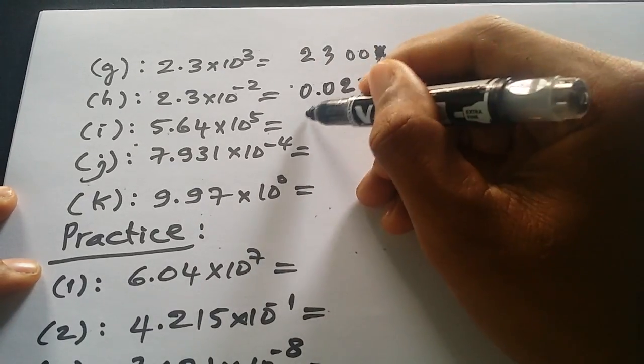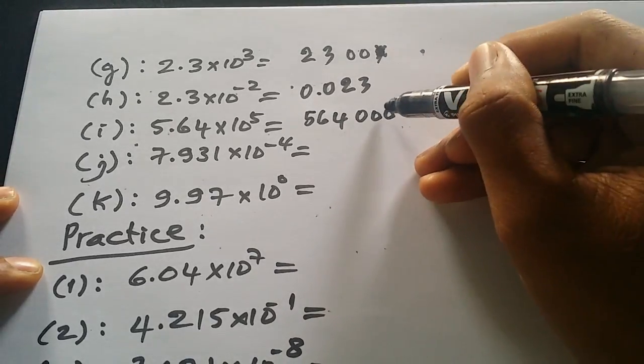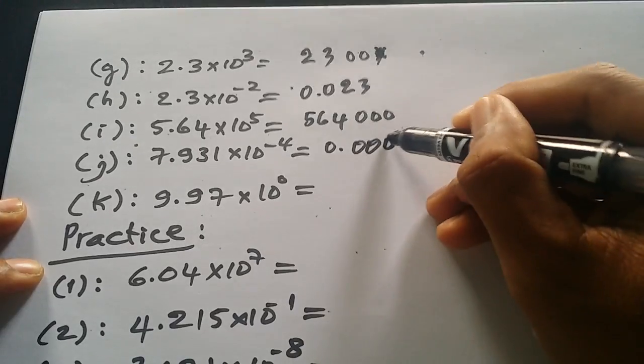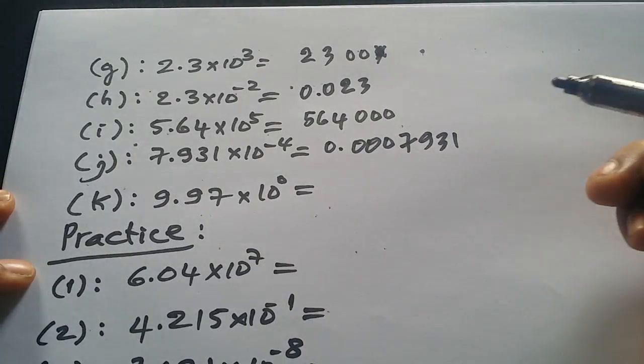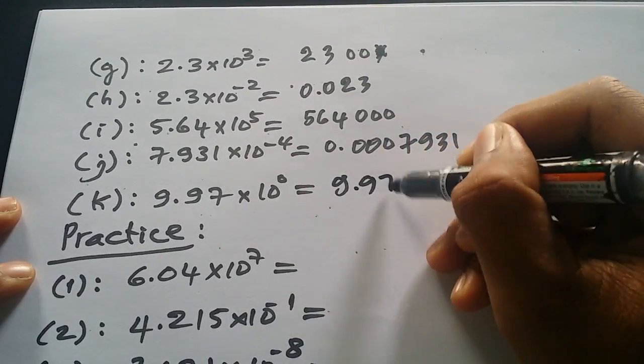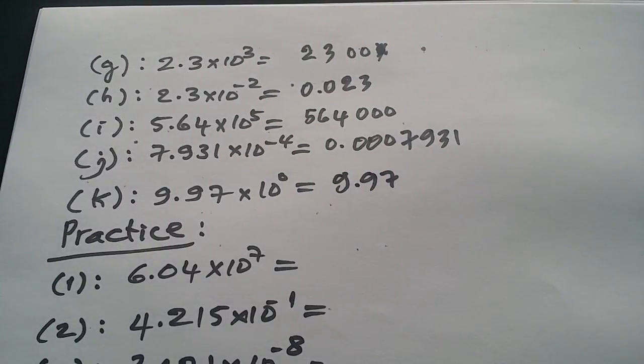Now this one, 564 and zero three times, we can write as 0.000. Four times 791, and then it will be 9197, the same thing.